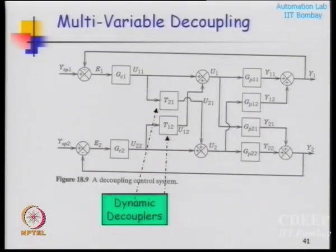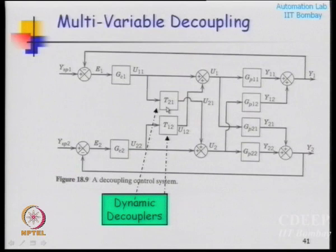In our last lecture we were discussing multivariable control and multivariable decoupling. I talked about introducing two new dynamic elements T21 and T12 into my controller.